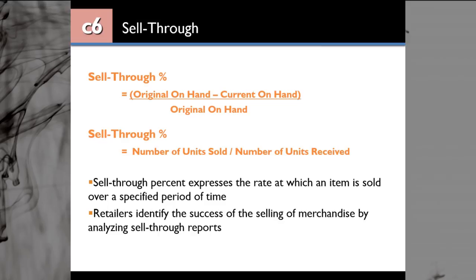Here is the formula: Sell Through Percent = (Original Merchandise On Hand − Current Merchandise On Hand) ÷ Original Merchandise On Hand. That tells you what percentage of the merchandise was sold. If you have a higher sell through rate, that means you are selling the merchandise well. If you have a low sell through rate, the product is not selling well, and at that point you can consider possible markdowns.